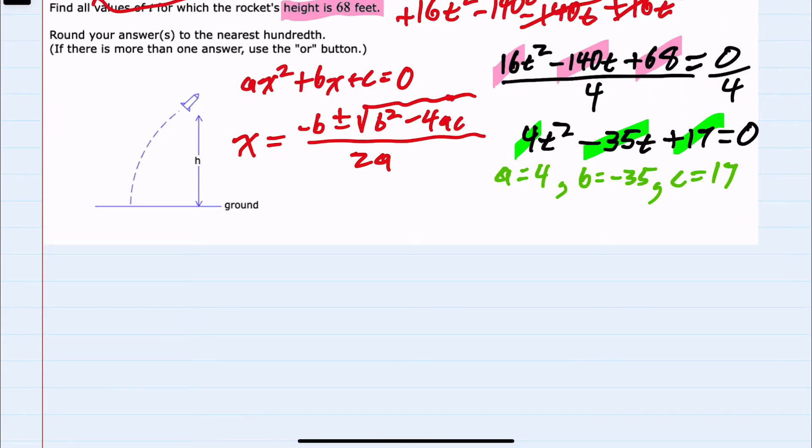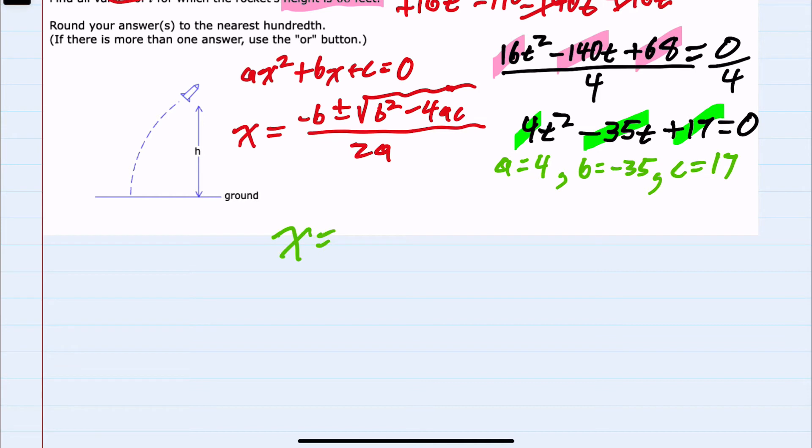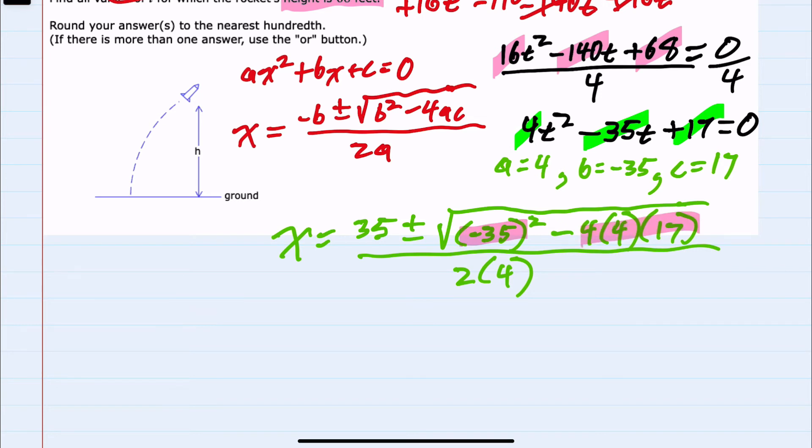Now doing the substitution, I have x equals negative b—b is negative 35 so that would be positive 35—plus or minus the square root of b squared, so that's negative 35 squared, minus 4 times a which is 4 times c which is 17, over 2 times a or 2 times 4. So we can now begin to simplify by doing all of this multiplication.